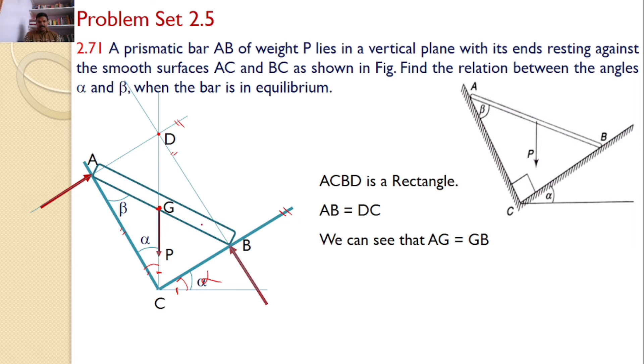Hence AG must equal GB. In a similar way, DG must equal GC, because G is the common intersecting point for both the diagonals. Hence DG must equal GC.